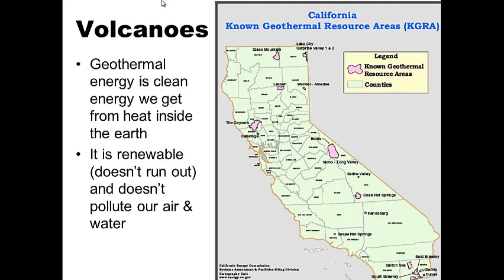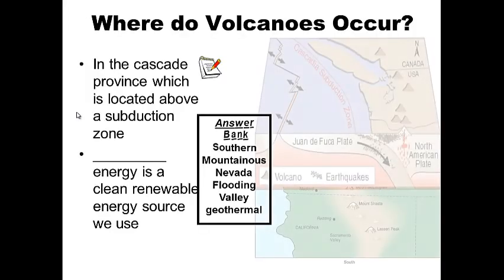Geothermal energy is clean energy — it's heat from inside the earth. We tap into the magma or heat underneath the volcanoes and use that heat to generate energy. It's renewable, it doesn't run out, and it doesn't pollute our air and water. We have geothermal plants located near the volcanoes here in California, and they produce clean, renewable energy for the state.